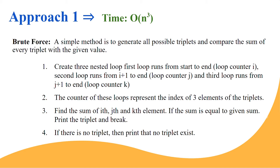The outermost loop runs from start to end. The second loop starts from i+1 to the end, and the third innermost loop runs from j+1 to end. The second loop starts from i+1 because a[i] has already been taken, so we can't take it again — numbers in the triplet should be distinct. Similarly, the innermost loop starts from j+1 because j has already been taken.